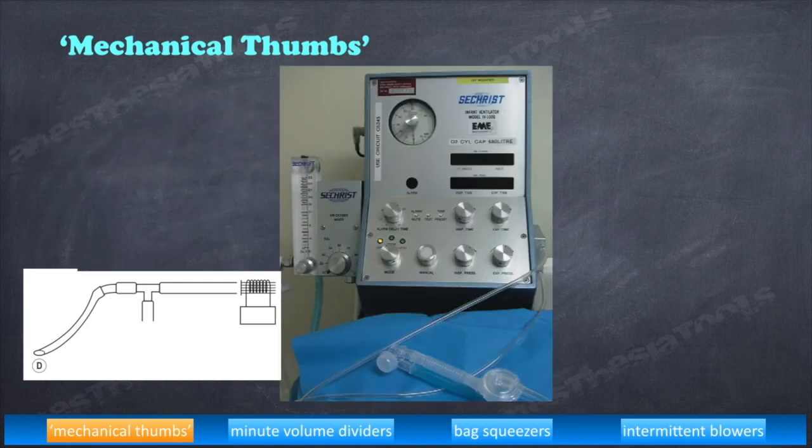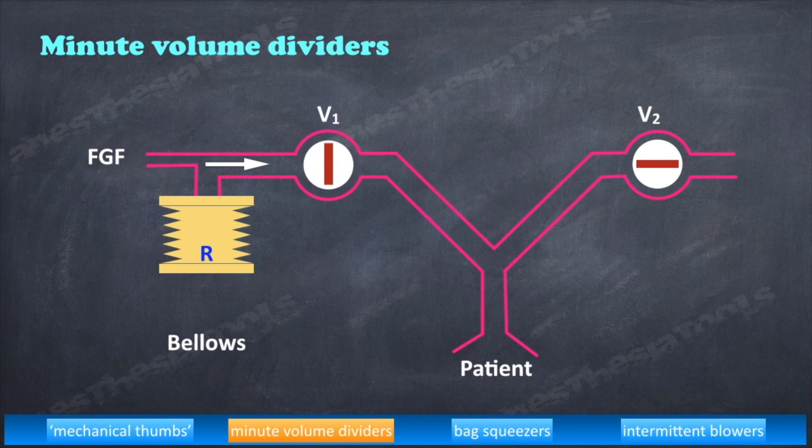In ventilators of this type, the operator's thumb is replaced by a pneumatically operated valve, the cycling of which is determined by the settings of the ventilator controls. Second one is minute volume dividers. A more economical method of using a continuous source of pressurized gas is to feed it into a ventilator system to be collected by a reservoir.